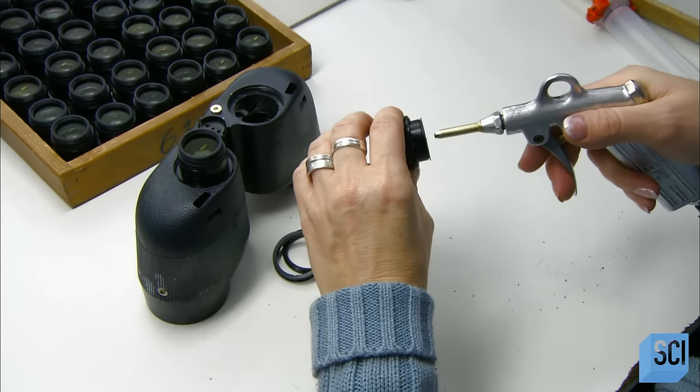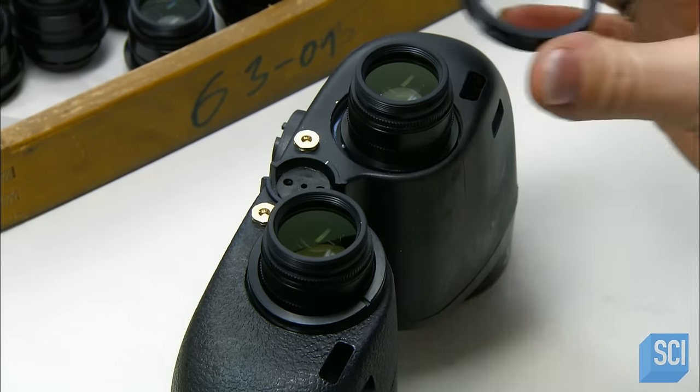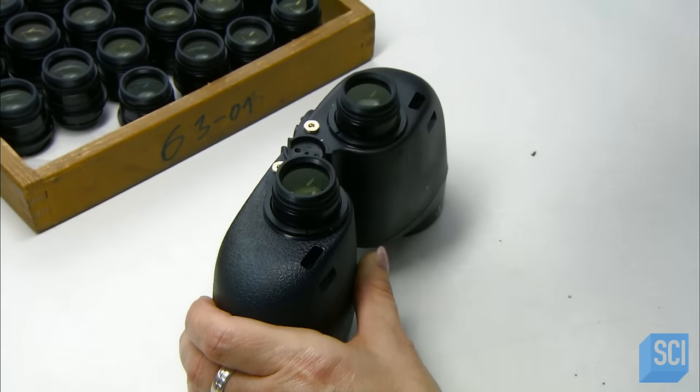Onto the opposite end of the middle section go the oculars, the smaller lenses through which you look. Those also attach with threaded holding rings.